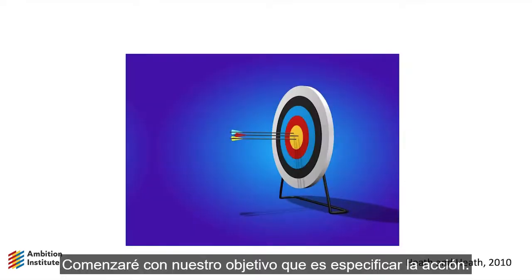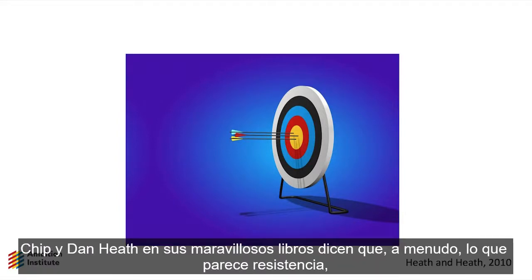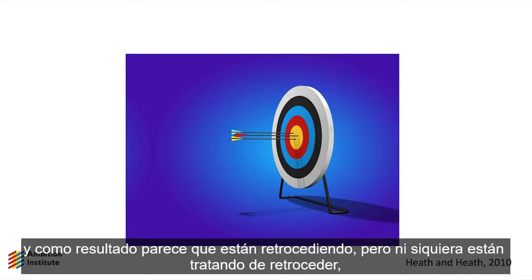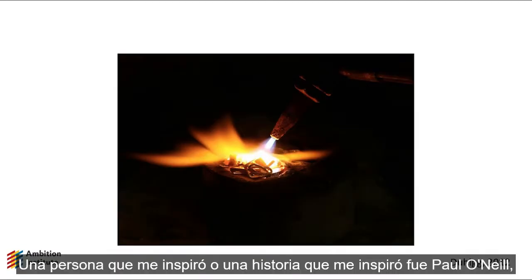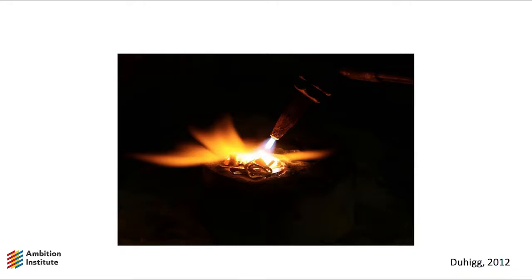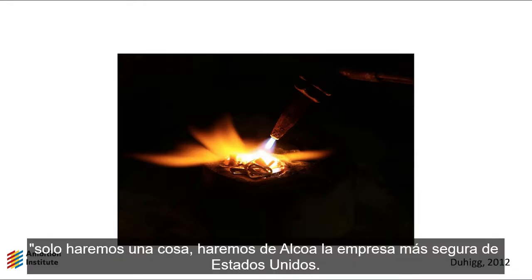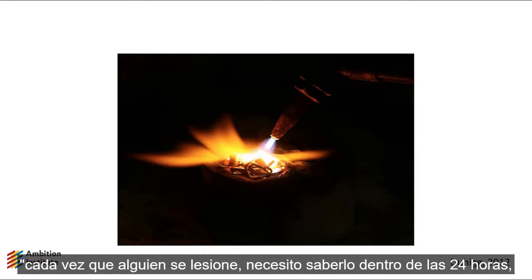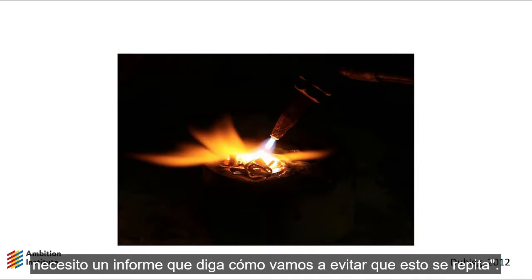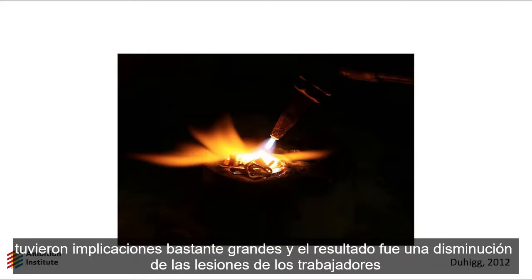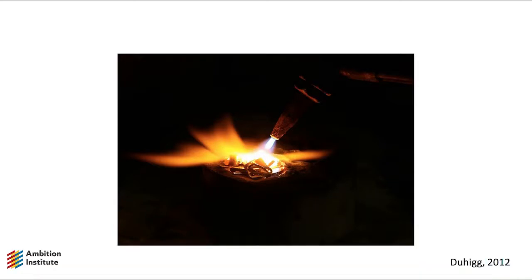We've moved heaven and earth to get work home for students, get ourselves online, and not all students are benefiting. Students who are least likely to participate are of course the ones we're most worried about. So I'll talk about four issues - in each case a little bit of evidence and how you might apply it. I'll start with specifying the action. Chip and Dan Heath in their wonderful book 'Switch' say often what looks like resistance is a lack of clarity - we're not clear enough about what we want people to do. A story that inspired me was Paul O'Neill, who took over at Alcoa, an aluminium manufacturing organisation. It was big, old, and inefficient, but he said we're just going to do one thing: make Alcoa the safest company in America - no worker injuries. He created a clear habit: any time someone gets injured, I need to know within 24 hours with a report on how to avoid repetition. This drove whole organisational change, worker injuries dropped, and Alcoa became profitable and successful again.